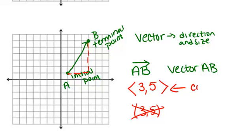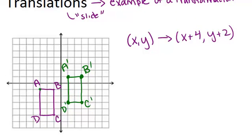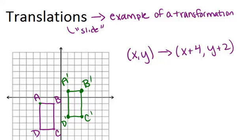This right here is called the component form of the vector because it sort of breaks it down and shows the horizontal change and the vertical change as 3 and 5. And again vectors are related to translations because vectors can help to sort of describe the translation of a point to another point.